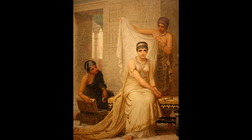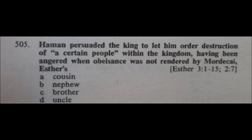Question number 505: Haman persuaded the king to let him order destruction of a certain people within the kingdom, having been angered when obeisance was not rendered by Mordecai, Esther's A) cousin, B) nephew, C) brother, or D) uncle. I think the answer is A, cousin. I can remember the Bible says something about his uncle's daughter, which would make her his cousin. For 505, I'm going with A, cousin.